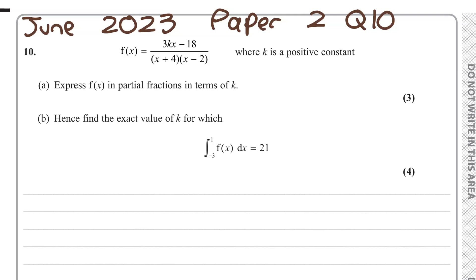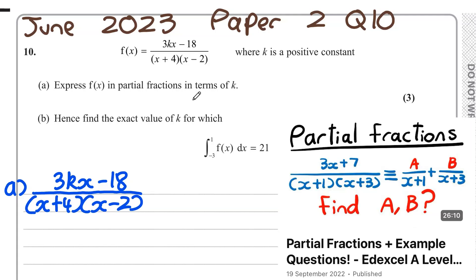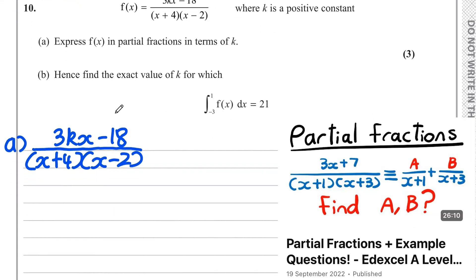Here's a question on this — pause the video if you want to have a go at it. For this question, we're told f(x) is equal to (3kx − 18) / ((x + 4)(x − 2)), where k is a positive constant. For Part a, worth three marks, we need to express f(x) in partial fractions in terms of k.